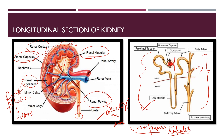Inside the kidney there are millions of nephrons, also called renal tubules or uriniferous tubules. Each nephron starts from the Bowman's capsule — a cup-like structure which continues as a narrow, convoluted or twisted tubule. This tubule then opens into a collecting tubule or collecting duct. The parts of the nephron are: first, the proximal convoluted tubule; then the loop of Henle; then the distal convoluted tubule; and finally the collecting tubule, which leads to the ureter.